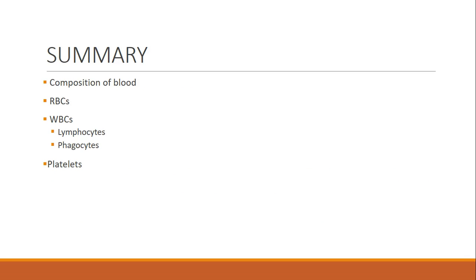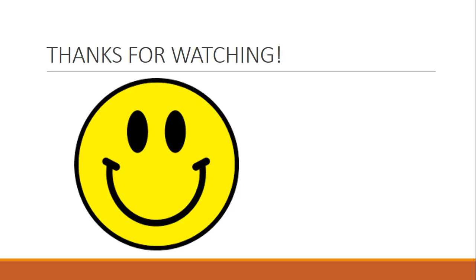Overall, we've learned about the composition of blood: red blood cells, white blood cells, and platelets. Go back and have a quick read to make sure everything makes sense. Thanks for watching, and I'll see you in the next video.